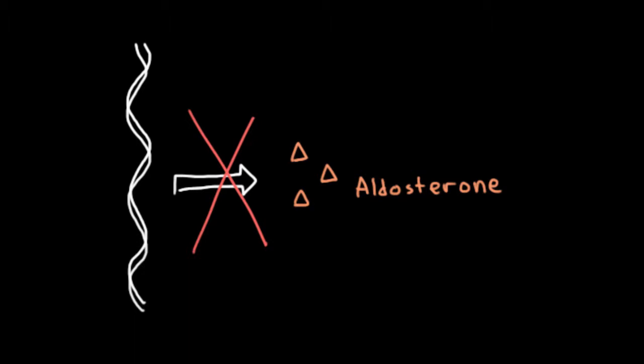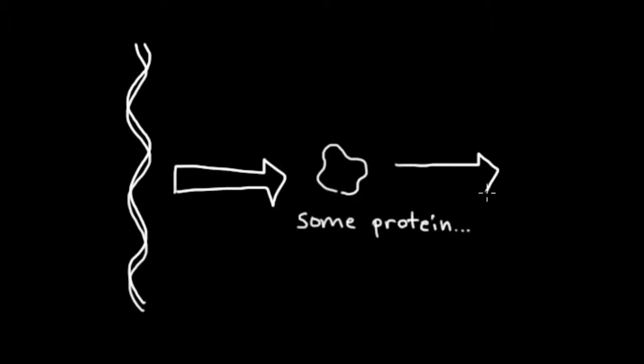The answer is actually we don't, because aldosterone is a steroid hormone. So it's made not of amino acids, but it's made from cholesterol. So actually we have a gene for a protein which itself makes aldosterone. So that's the gene I'm drawing here.